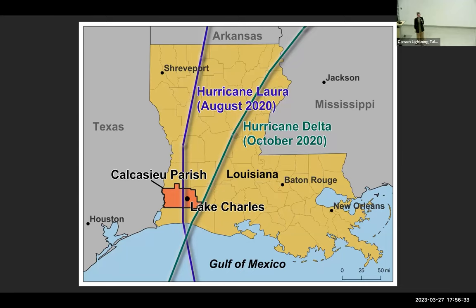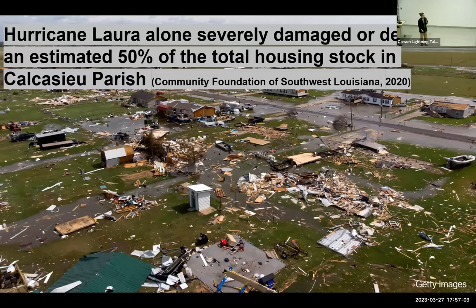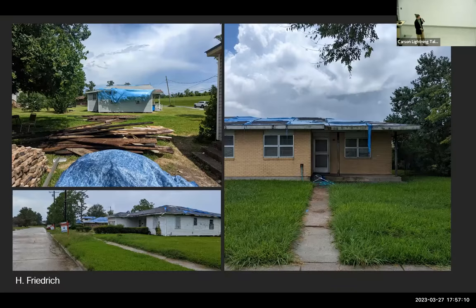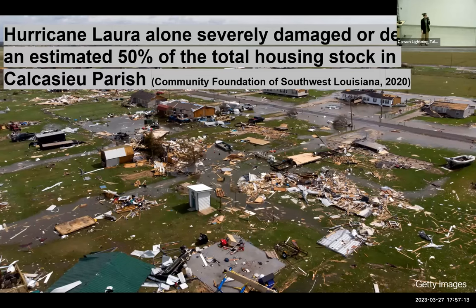I want to take you to the city of Lake Charles, located in Calcasieu Parish in southwest Louisiana. In the fall of 2020, Lake Charles was hit by two category four hurricanes — Hurricane Laura and Hurricane Delta — which occurred about five weeks apart from one another. These two massive hurricane events are really a bellwether for what climate change has in store for the Gulf Coast, with large hurricane events bringing more wind and rain to the Gulf. Hurricane Laura alone severely damaged or destroyed an estimated 50% of the total housing stock in Calcasieu Parish, which is really significant.